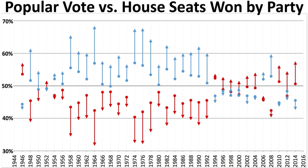Those who supported the Washington administration were referred to as 'pro-administration' and would eventually form the Federalist Party, while those in opposition joined the emerging Democratic-Republican Party.